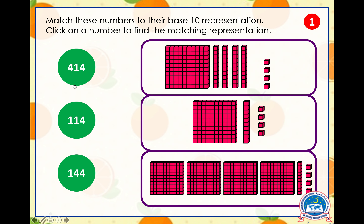Let's try another one. Here we have four hundred and fourteen, four hundred and one, one hundred and fourteen, and one hundred and forty-four. If you've guessed that four hundred and fourteen goes to this picture over here, well done! Here we have four groups of one hundred — one hundred, two hundred, three hundred, four hundred — we only have one group of ten and four ones, which matches perfectly with this number.